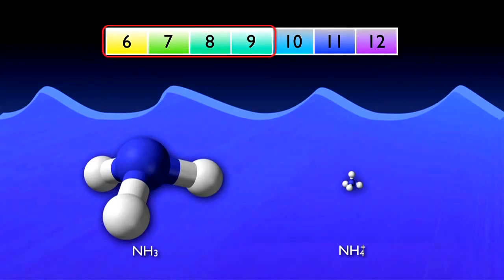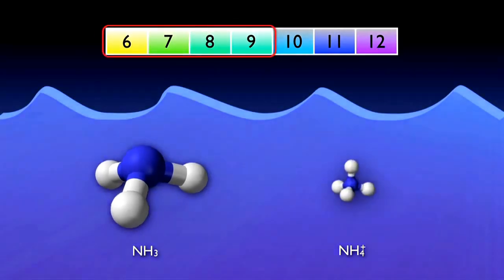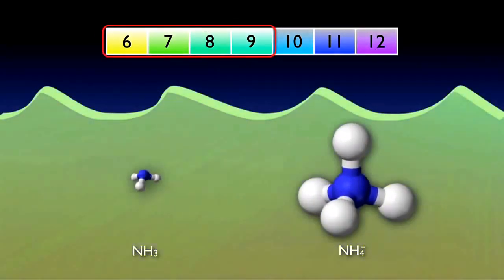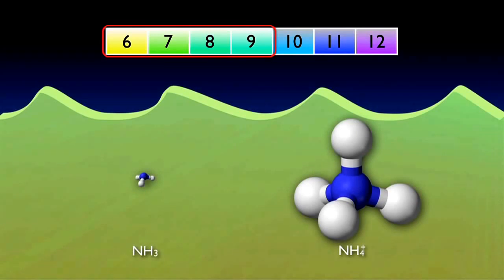Since wastewater typically ranges between a pH of 6 and 9, almost all of the ammonia will be in the ionic form. Since ammonia testing accounts for both forms — ionic and gaseous — it is not necessary to worry about each form separately. No bacteria is necessary for this conversion; it just happens.